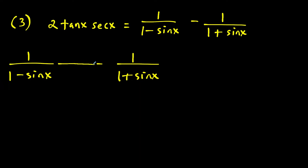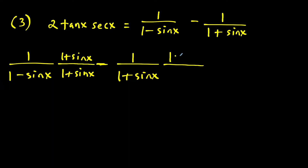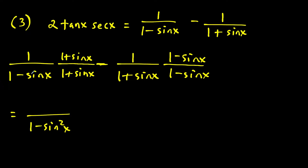The first fraction we multiply by (one plus sine x) over (one plus sine x), and the second fraction by (one minus sine x) over (one minus sine x). This gives both fractions common denominators. Notice the denominators involve (one minus sine x)(one plus sine x), which is a binomial times its conjugate, giving us one minus sine squared x — just like in the first example, so we know it will simplify nicely.